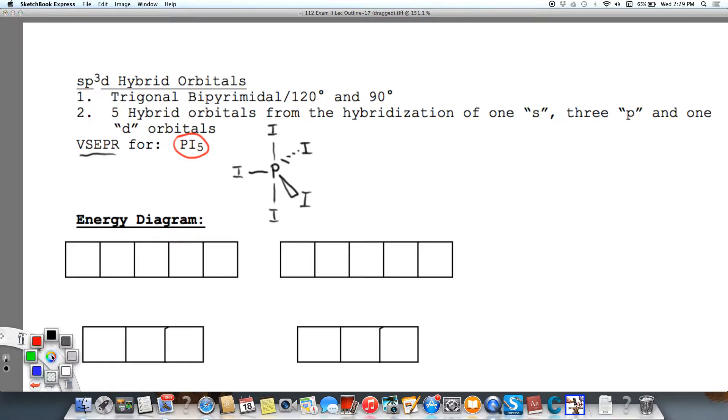And then we can see that we have our triangle here in one plane. This is going to be trigonal bipyramidal. This angle right here is going to be 90 degrees, and that's going to be our axial. And then our equatorial is going to be 120 degrees, all three of those equatorial angles.